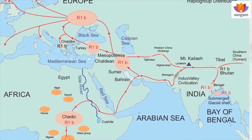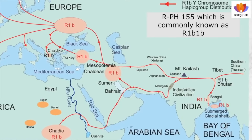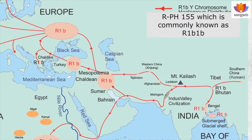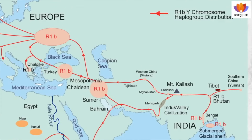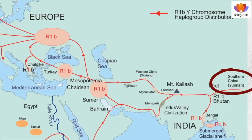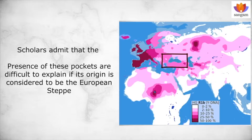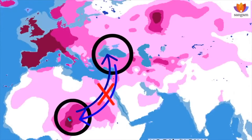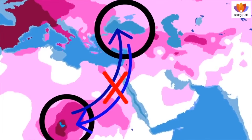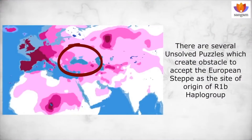Interestingly, several pockets of RPH-155, commonly known as R1-Bravo-1-Bravo, are found in isolated locations — for example in Bhutan, Ladakh, Xinjiang province of Western China north of Ladakh, Yunnan province of Southern China close to North East India, Tajikistan, Turkey, and Bahrain. Scholars admit that the presence of these pockets is difficult to explain if the origin of R1-Bravo haplogroup is considered to be the European steppe. Moreover, there is no linguistic continuity between the European steppe and Afro-Asian-speaking Africa where R1-Bravo is present. Thus, there are several unsolved puzzles which create obstacles to accepting the European steppe as the site of origin of R1-Bravo haplogroup.